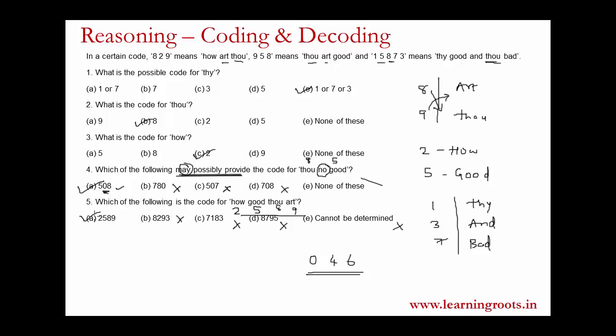For coding and decoding, the important thing to understand is where to start. To get a starting point, compare two strings — whatever is common, write it down. If there is only one common code or word, then that correspondence is explicitly determined. Having a clear notation reduces confusion and lets you see what is given versus what is ambiguous. This saves 5 to 10 seconds per question, and the cumulative time saved across all questions can make a real difference.